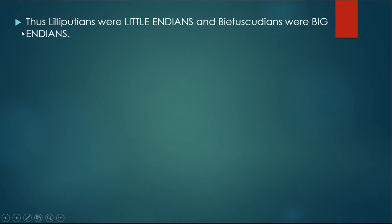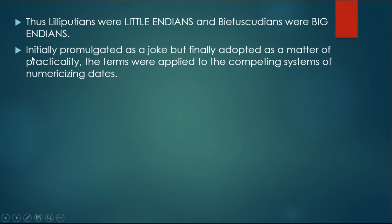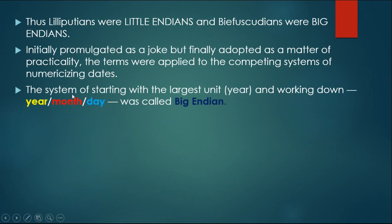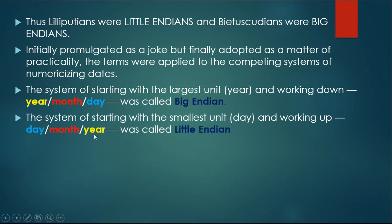Thus Lilliputians were little Indians and Blefuscuans were big Indians. Initially promulgated as a joke but finally adopted as a matter of practicality, the terms were applied to the competing systems of numericizing dates. The system of starting with the largest unit year and working down — year-month-day — was called Big Indian. The system of starting with the smallest unit day and working up — day-month-year — was called Little Indian.